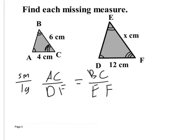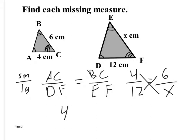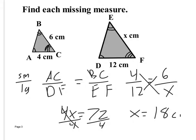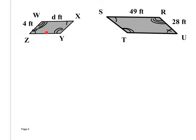Sometimes they'll give you a side you can't use, so make sure you know your ratios before plugging in numbers. AC was 4, DF was 12, BC was 6, and EF was x. So I set up the proportion: 4 over 12 equals 6 over x. I cross multiply to get 4x equals 72, divide by 4, and x equals 18 centimeters. Make sure your units are included.